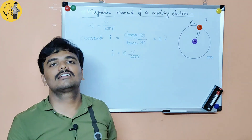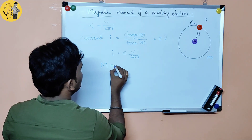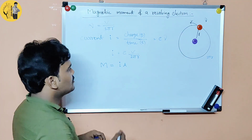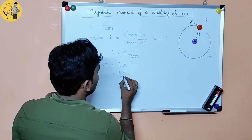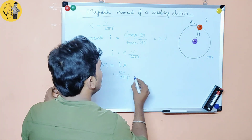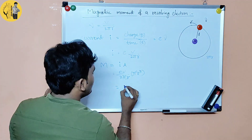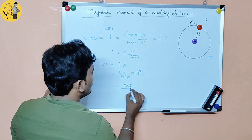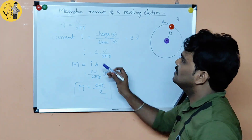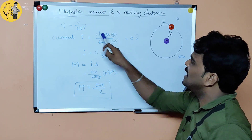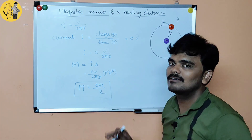Using the magnetic moment formula from the first case, M equals i A. Here current i equals eV by 2 pi r, and area A equals pi r squared. Substituting: M equals eV by 2 pi r times pi r squared. Pi and pi cancel, r and r squared give r. So M equals eVr by 2. This is the magnetic dipole moment of a revolving electron.